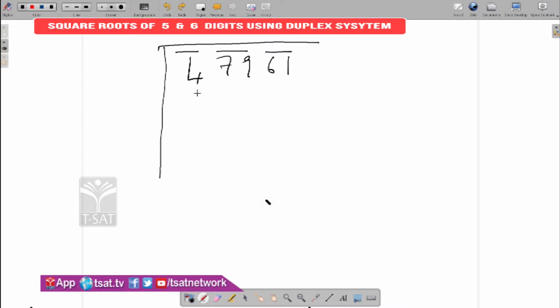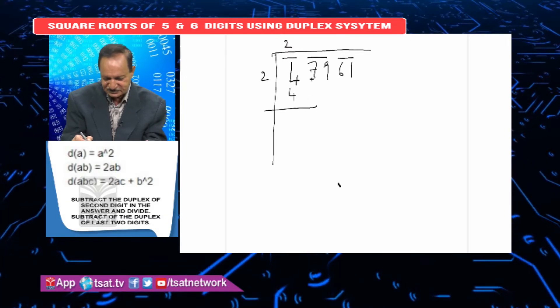We'll use the same system. First step: you can write 4. Which number squared gives us 4? The square root of 4 is 2. That's our first digit.